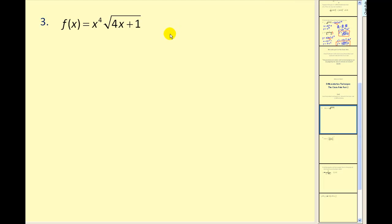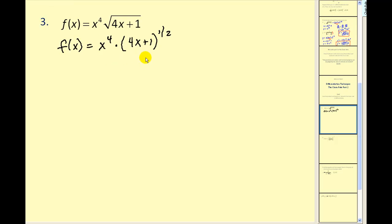Let's take a look at this problem. First thing we should recognize is we cannot find this derivative in this form. We're going to rewrite this as 4x plus 1 to the 1 half power. Now this problem actually has a lot going on — we have a product of two functions and the second function is a composite function.